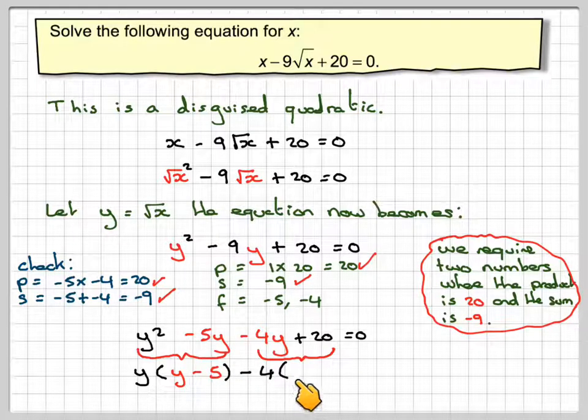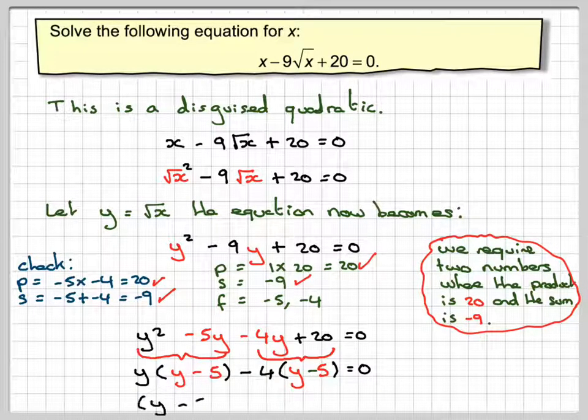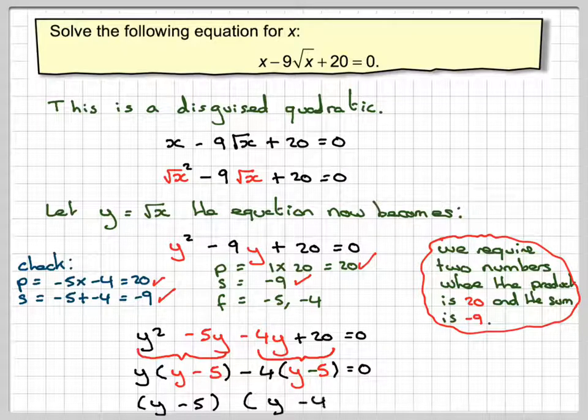And then group these two together. And we get 4 brackets. And then again, we're going to get y minus 5. The sign here changes because when you do a minus times a minus, it gives back to the plus. That's still equal to 0. Now we've got y minus 5 is a common factor. So that now comes out to get y minus 5 brackets y minus 4 is equal to 0.